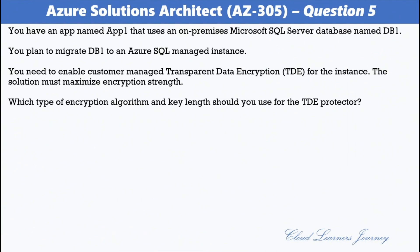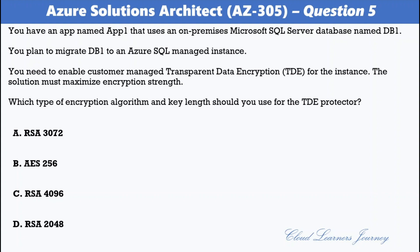Question number 5. You have an app named App1 that uses an on-premises Microsoft SQL Server database named DB1. You plan to migrate DB1 to an Azure SQL Managed Instance and need to enable customer-managed transparent data encryption, maximizing encryption strength. Which encryption algorithm and key length should you use for the TDE protector? Options are: A. RSA 3072; B. AES 256; C. RSA 4096; D. RSA 2048. The correct options are A. RSA 3072 and D. RSA 2048. The TDE protector can only be an asymmetric RSA or RSA HSM key, and the supported key lengths are 2048 and 3072 bytes.